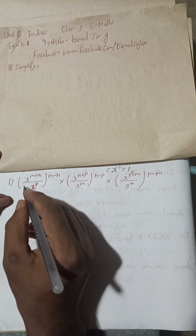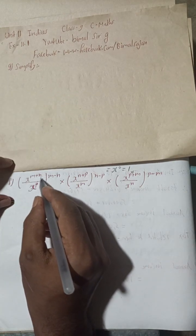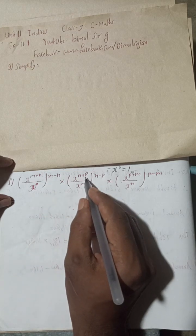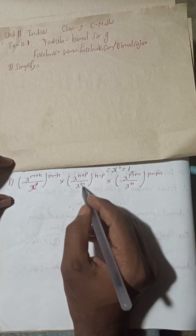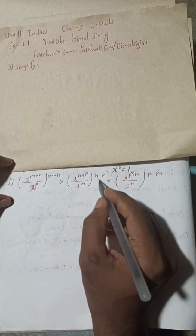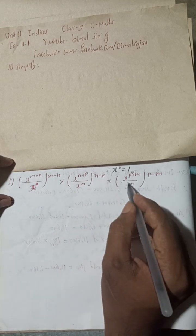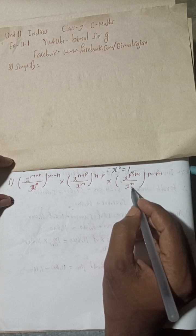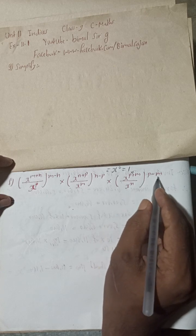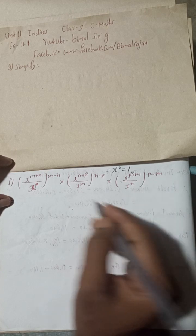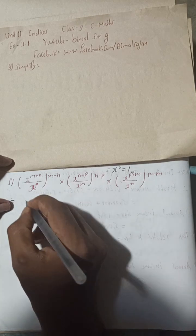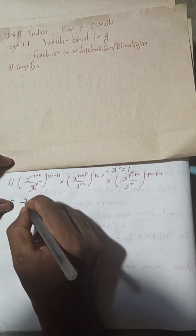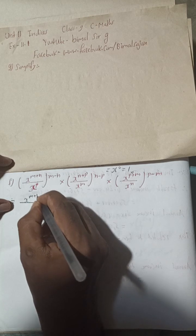Question 9F: x to the power (m+n) over x to the power p, whole power (m−n), multiplied by x to the power (n+p) over x to the power m, whole power (n−p), multiplied by x to the power (p+m) over x to the power n, whole power (p−m). Now we can begin working on this expression.